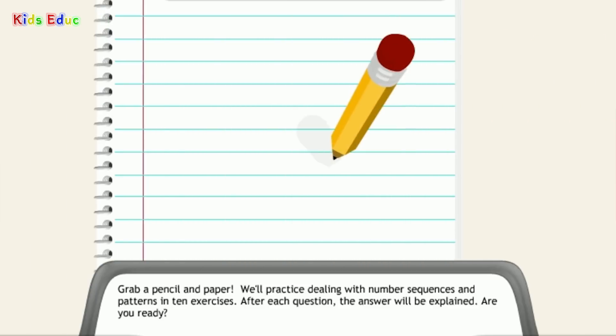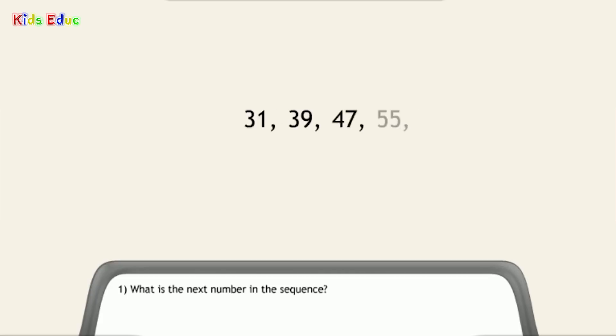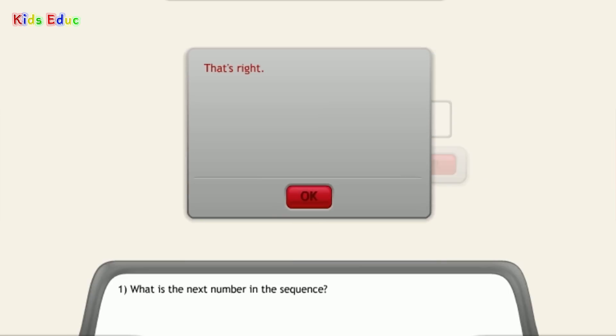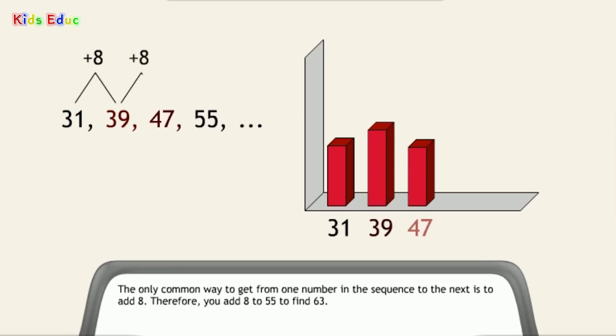Grab a pencil and paper. We'll practice dealing with number sequences and patterns in 10 exercises. After each question, the answer will be explained. Are you ready? Number 1. What is the next number in the sequence? 63. That's right. The only common way to get from one number in the sequence to the next is to add 8. Therefore, you add 8 to 55 to find 63.